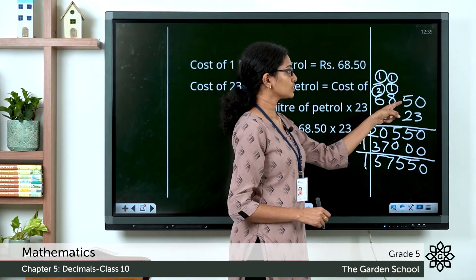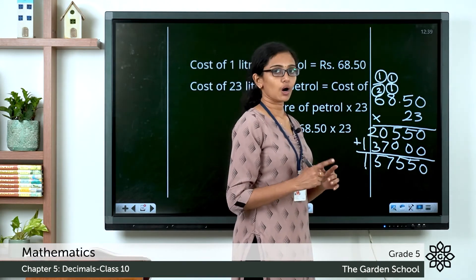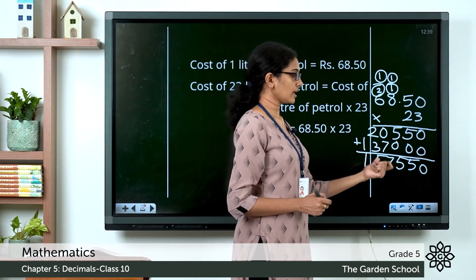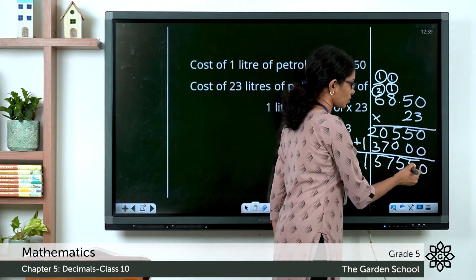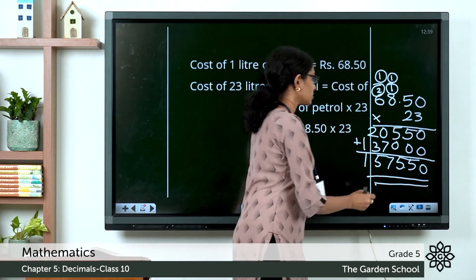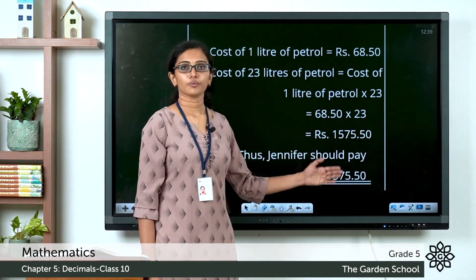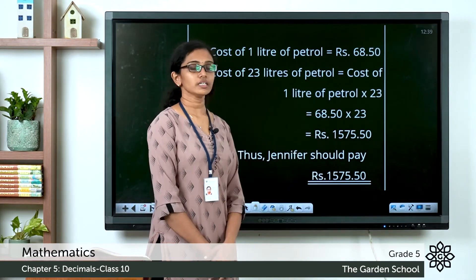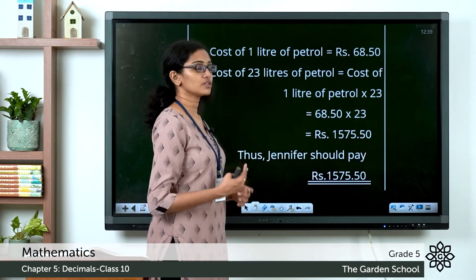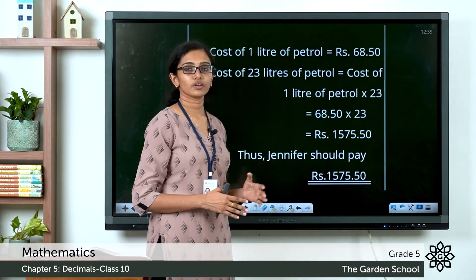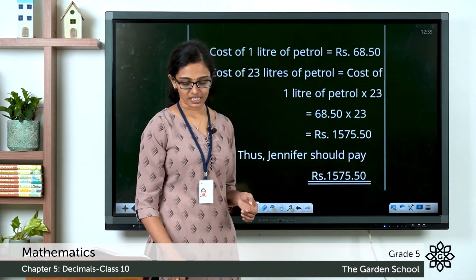Now we have to put the decimal point. In the decimal number there are two digits after the decimal point, so count two places from right to left in the final product — that would be 1, 2 — and put the decimal point there. So the cost of 23 liters of petrol is rupees 1575.50. Hope this is clear to you.